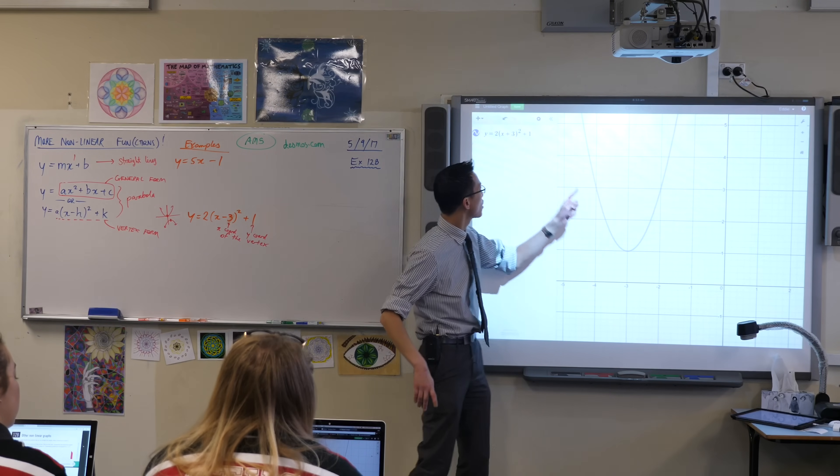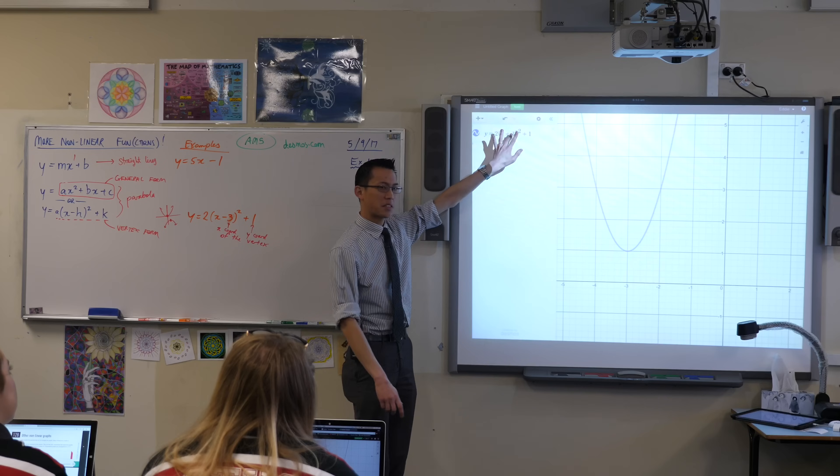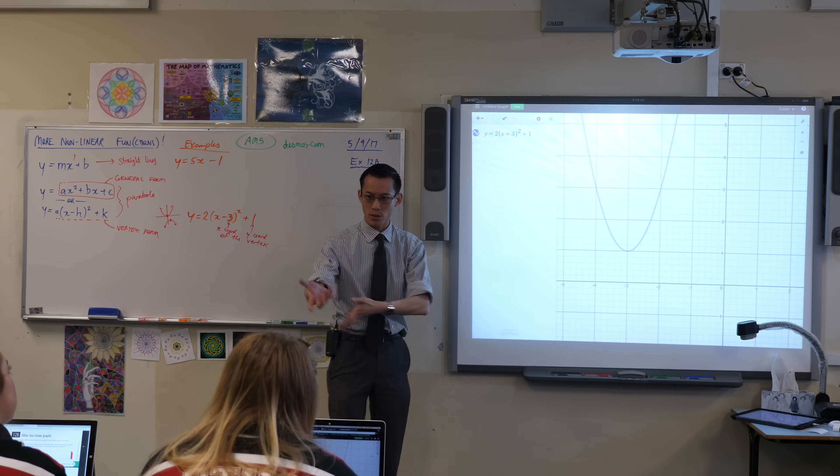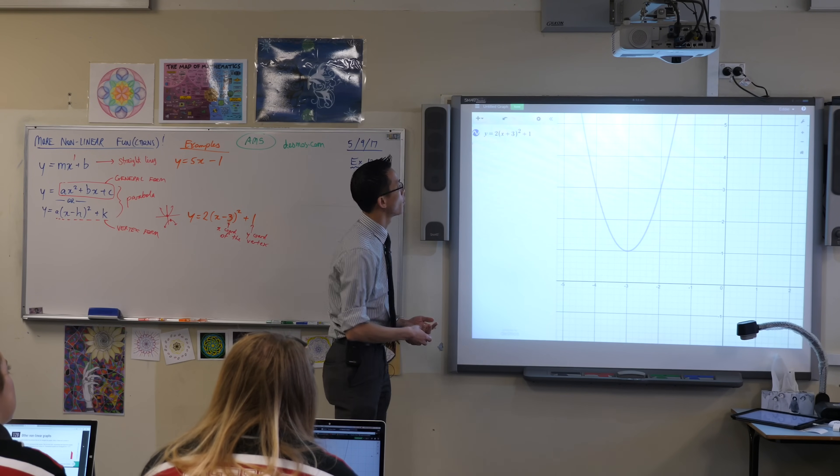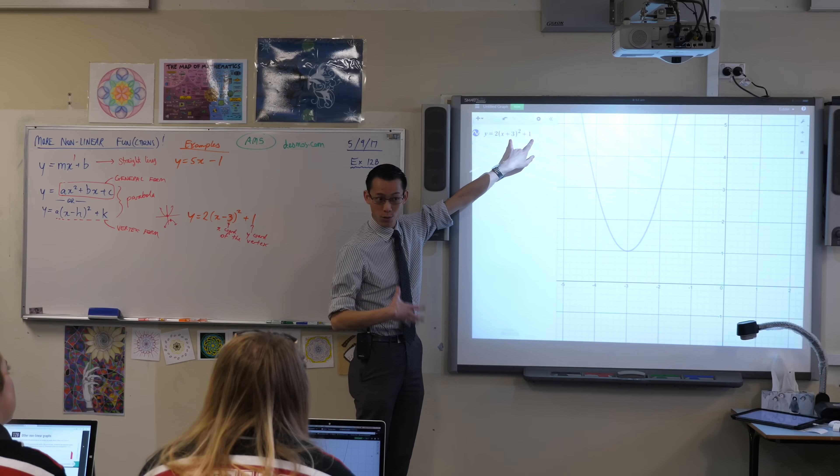So have a look at this. See how it's a plus, not a minus. It's the opposite of that. So it's admittedly a little bit confusing, but that's why you've got some technology to help you experiment with that a little bit. So these two numbers here, the 3 and the 1, in this context, will give you the vertex.